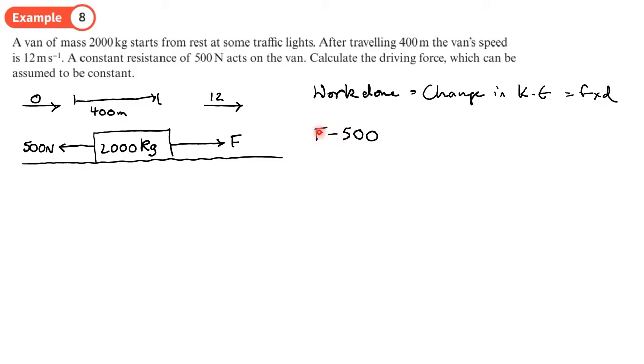The pulling force has to be 500 plus whatever force we work out. That resultant force, F minus 500, times d which is 400 meters, equals the change in kinetic energy. This is work done over this side, and on the other side we have work done which is change in KE.